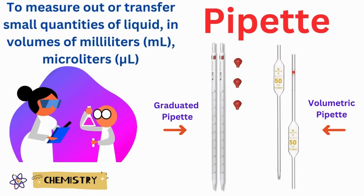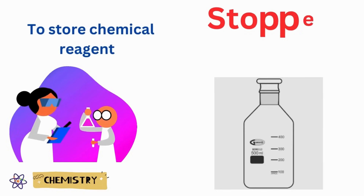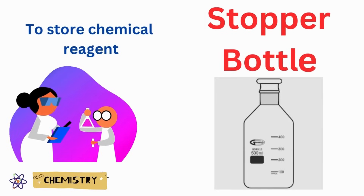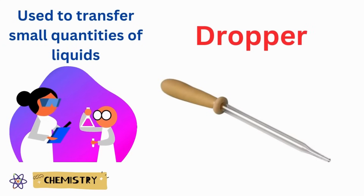Pipette. It is used to measure out or transfer small quantity of a liquid. Stopper bottle. To store chemical reagent. Dropper. To transfer small quantity of liquids.